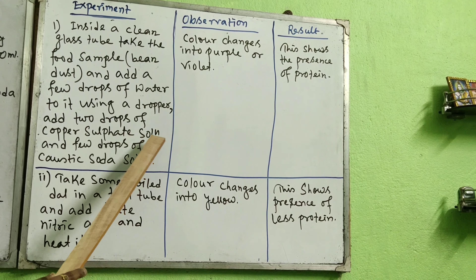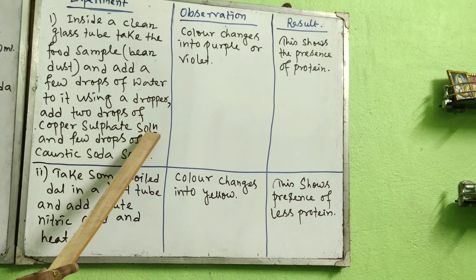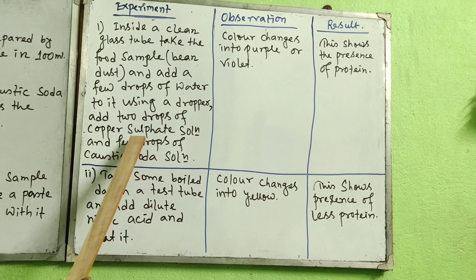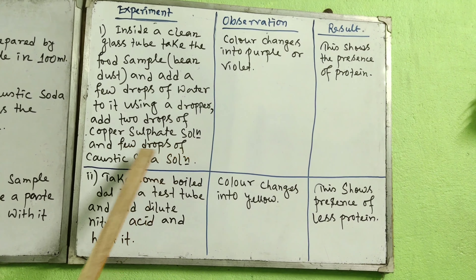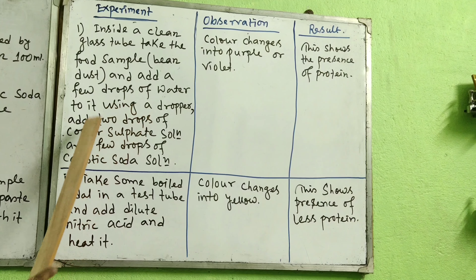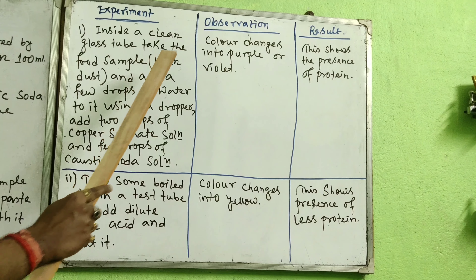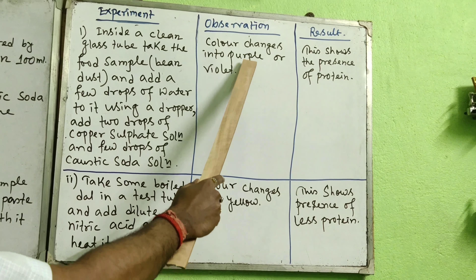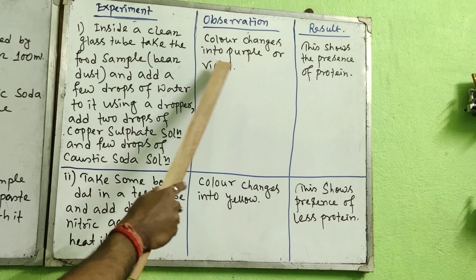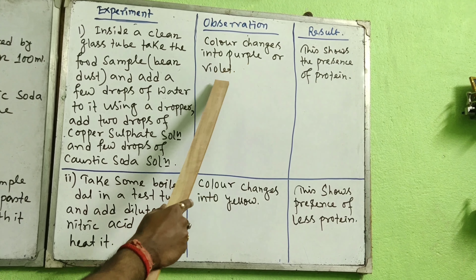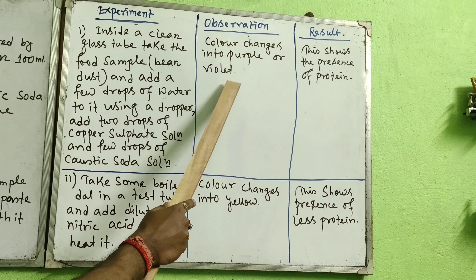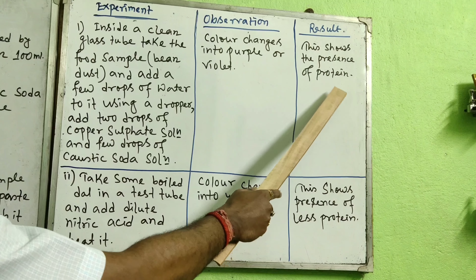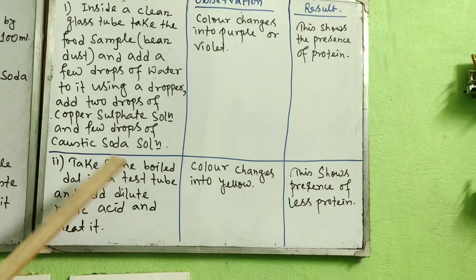Add those two drops of copper sulfate solution to the food sample. Then add about 10 drops of caustic soda solution with it — if you do not get the desired result you can add more. Shake it well. The observation will be that the color changes into purple or violet. If you observe any violet or purple color change, you can confirm that it shows the presence of protein.